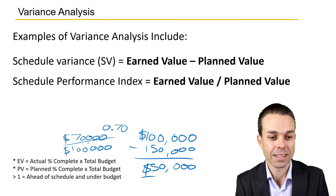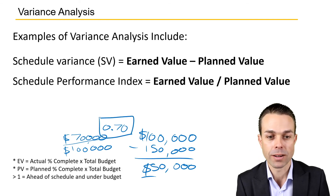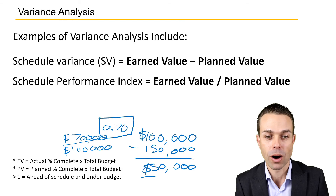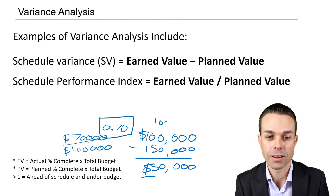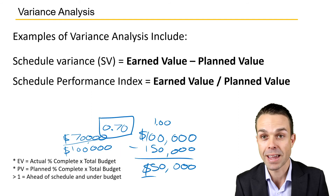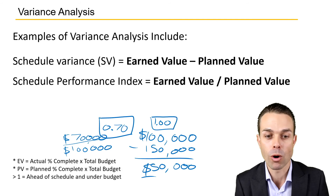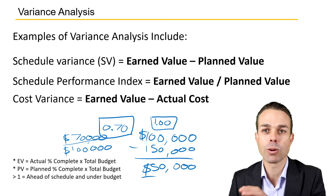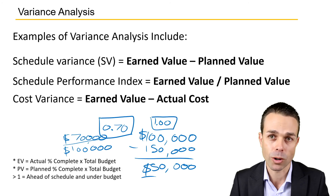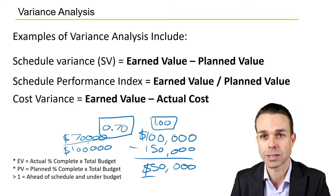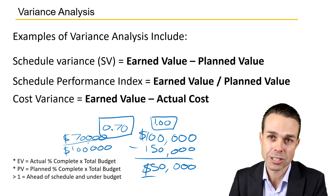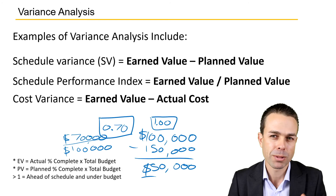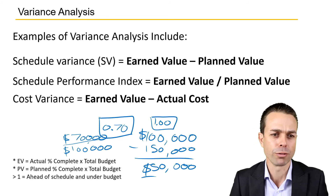As you can see, if the schedule performance index is less than one, we are behind schedule. If we are over one, then we are ahead of schedule — we've delivered more value than what we were expecting. We'll go into these in more detail as we go into cost management, project cost management, and project schedule management. But this is just a quick, broad overview.